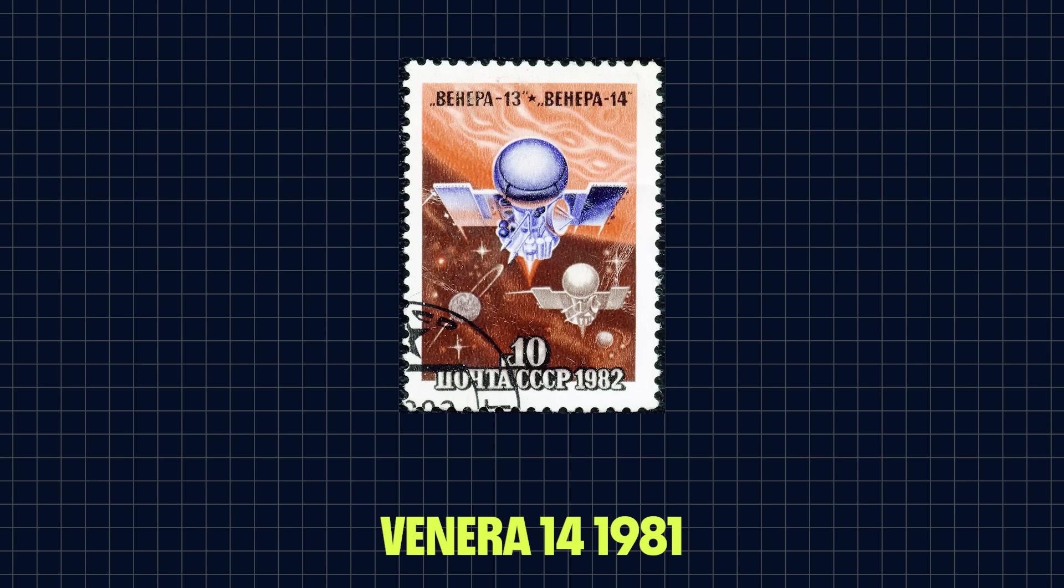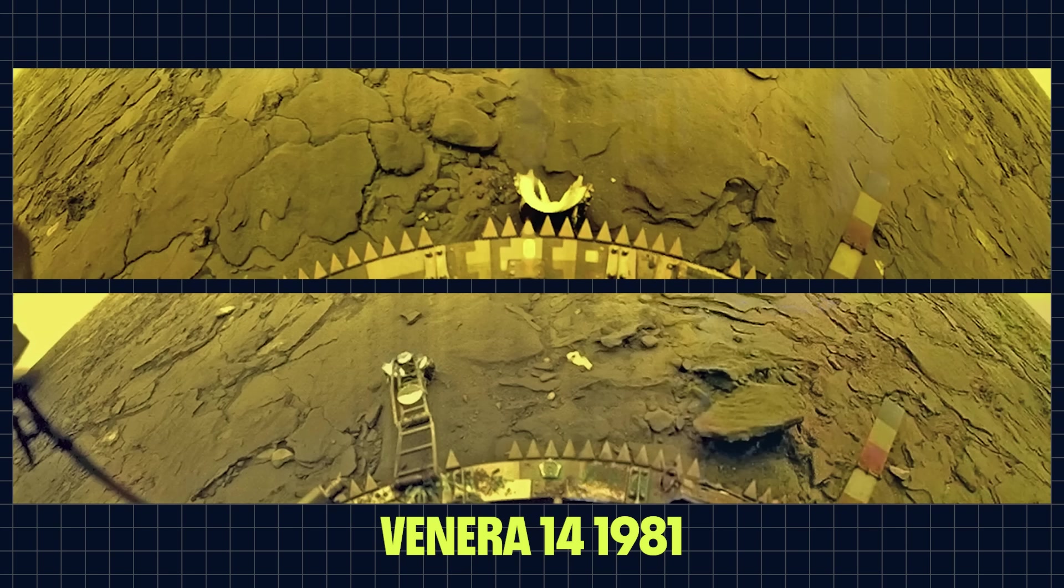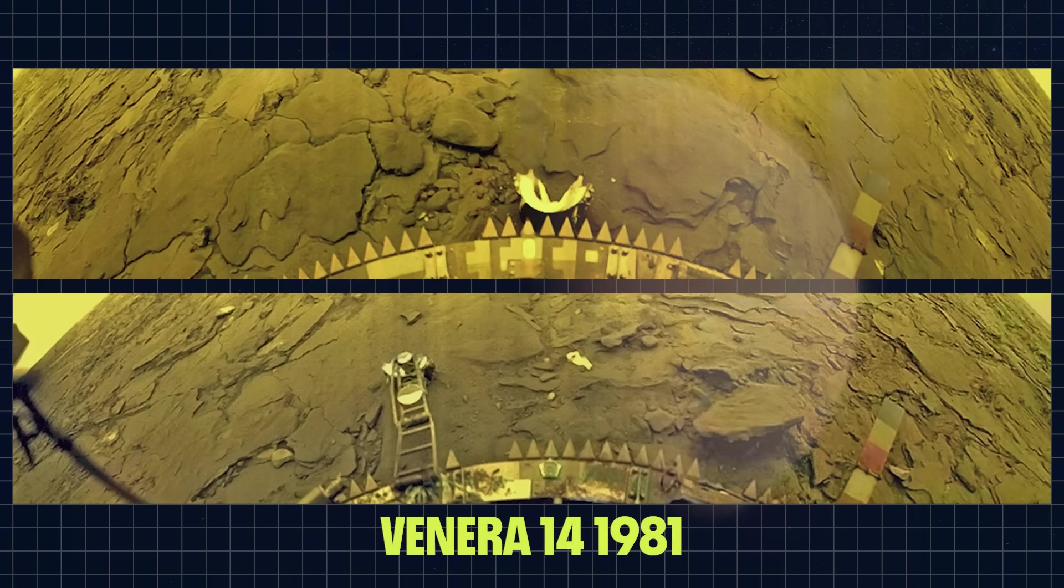Venera 14 was, again, pretty near identical. It found another flat plane of these smooth rocks, which were determined to be very similar to tholeiitic basalt, which is a volcanic rock that makes up most of the Earth's ocean floor. And that was it. That's the last time that a man-made object reached the surface of Venus, and along with it comes the last photograph ever taken of the surface.